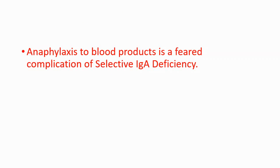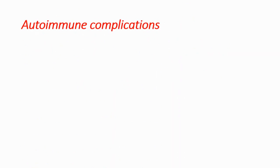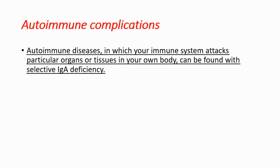Anaphylaxis to blood products is a feared complication of selective IgA deficiency, because when you get transfusions you're going to react to those IgAs. Patients may be completely asymptomatic until they require a transfusion.